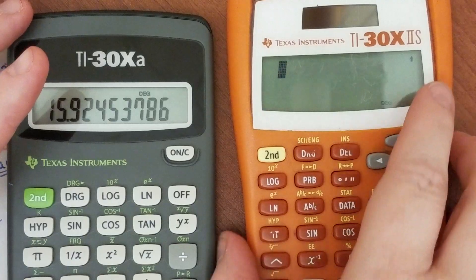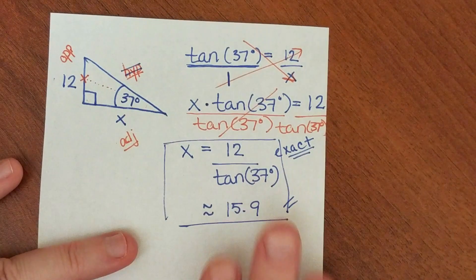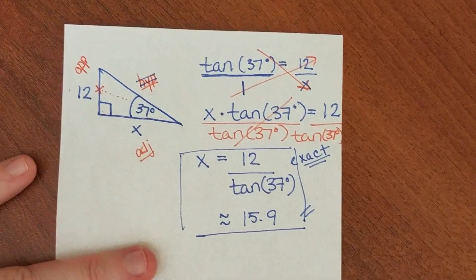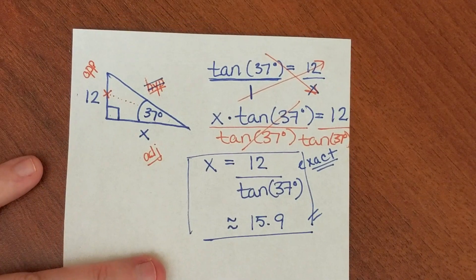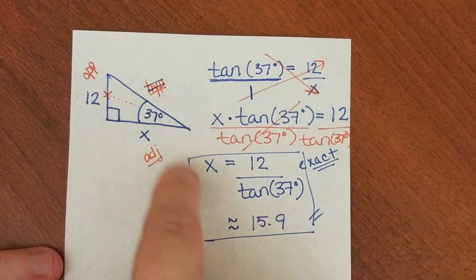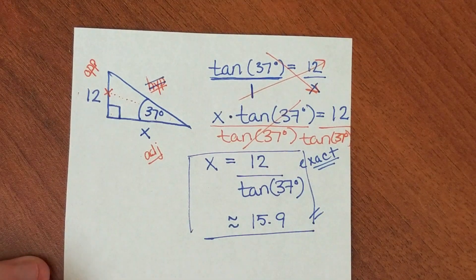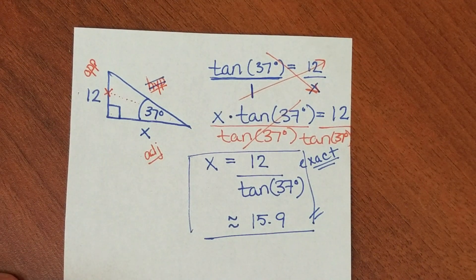In that example, we used the tangent because we had the opposite side and the adjacent side. So let's try one that uses a different trig function from tangent.